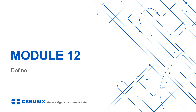In this module, we will be discussing the defined phase of the DMAIC methodology. This module will take approximately 40 minutes to complete. At the end of this module, there will be a 5-question quiz on the topics discussed, which you can complete on your own time. You will also find several Six Sigma tools that you can download, including a Project Charter template and a Stakeholder Analysis or RACI template, both of which are Excel files.